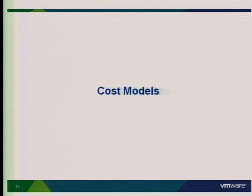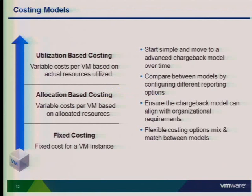Now, cost models. A cost model defines how to charge for hierarchy items. We have three basic types. First: fixed costing — a VM is a fixed amount of money regardless of its size or configuration, such as $500. That's obviously not ideal because a VM allocating more disk or memory should cost more. Second: allocation-based costing — you charge for the number of vCPUs, the memory assigned, or the disk storage actually allocated. Third: utilization-based costing — you charge only for what the VM actually uses.